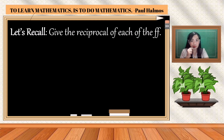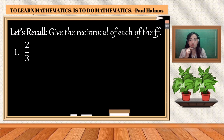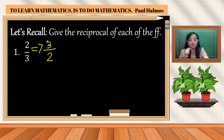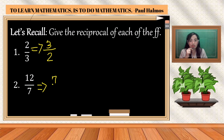Give the reciprocal of each of the following. When we say reciprocal, it is the multiplicative inverse of a number. To get the reciprocal, it is simply a matter of transposing the numerator and the denominator. Number one: the given is two-thirds. To get the reciprocal, simply transpose the numerator to the denominator and the denominator to the numerator. The reciprocal of two-thirds is three over two. Number two: the reciprocal of twelve over seven is seven over twelve.